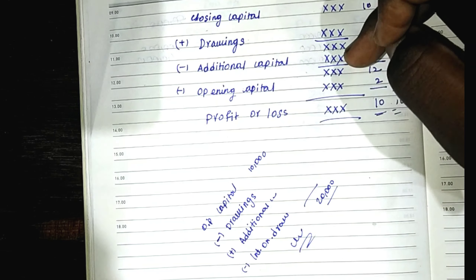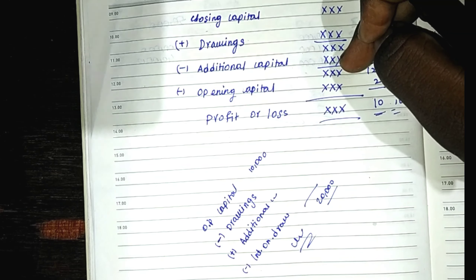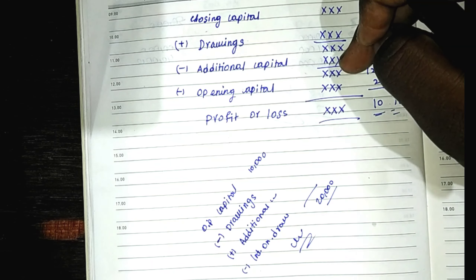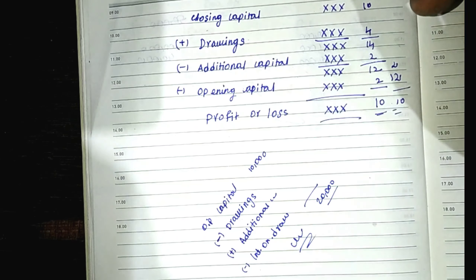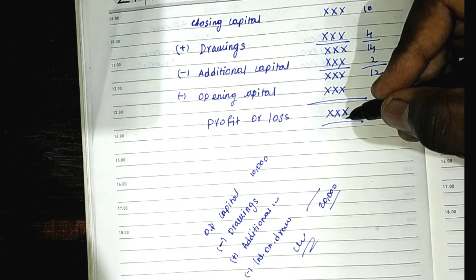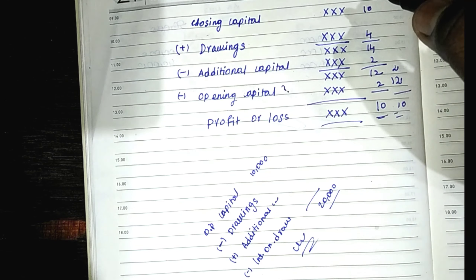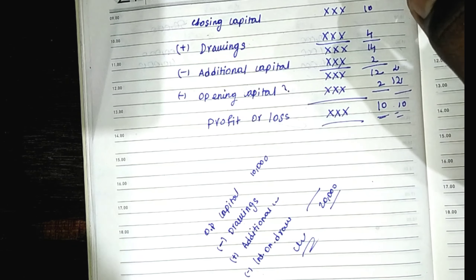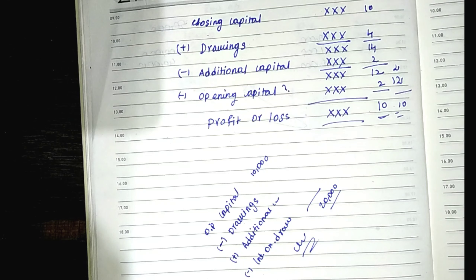If you want to study the partnership lesson — third lesson, fourth lesson — you can study additional capital and clear-cut details there. It is very useful. There is also a concept of the missing figure. Let's take a look at profit and loss and the opening capital. This is an easy method. Three methods are already uploaded.